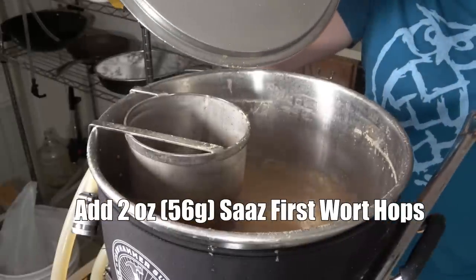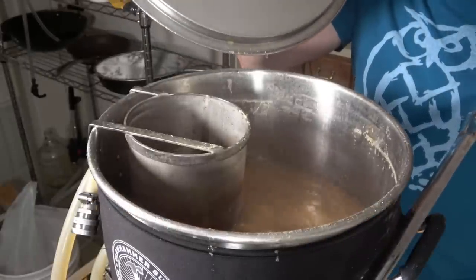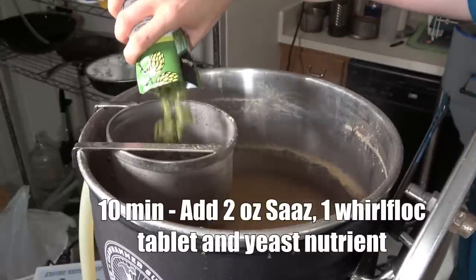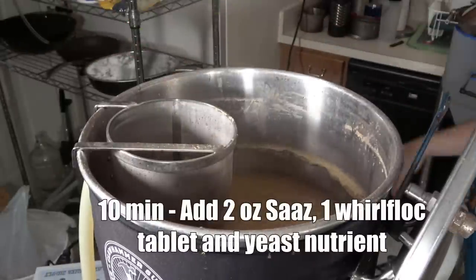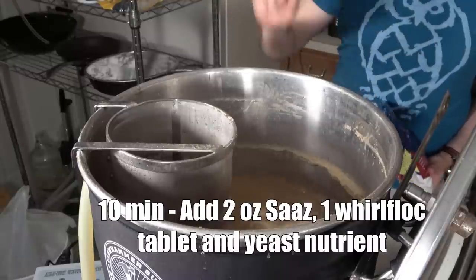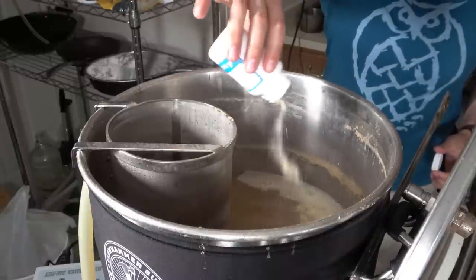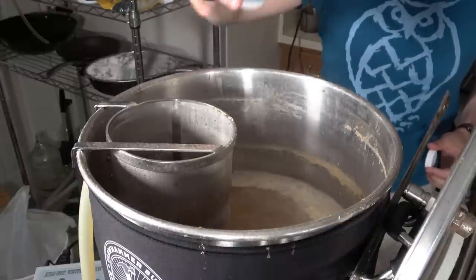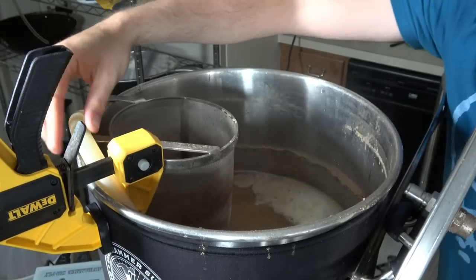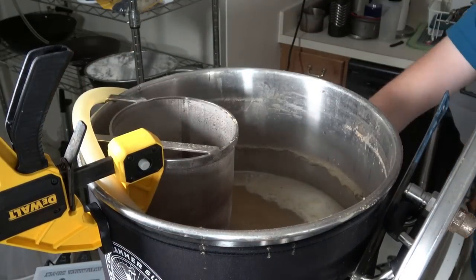Once I reached the boil, I let the boil continue for another 80 minutes. At that point, I added my 10-minute hop addition, another two ounces of Saaz, a Whirlfloc tablet, and some yeast nutrient. Lastly, I started recirculating boiling wort through my chiller to sanitize it, and this is the easiest way to ensure sanitation of your chilling equipment.